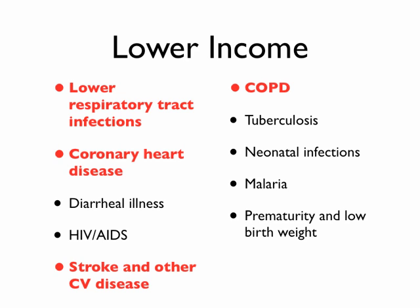The things highlighted in bold and red here — lower respiratory tract infections, coronary disease, stroke and cardiovascular disease, and COPD — these four things remain in the top ten for all three income classes. You'll see things like diarrheal illness and AIDS drop off as we go up in income level.